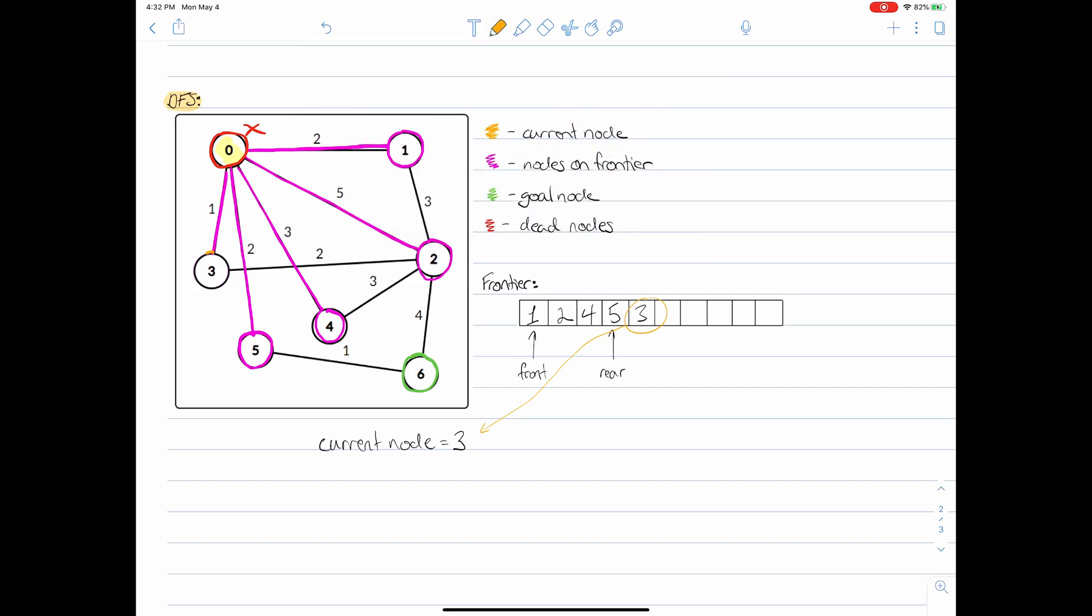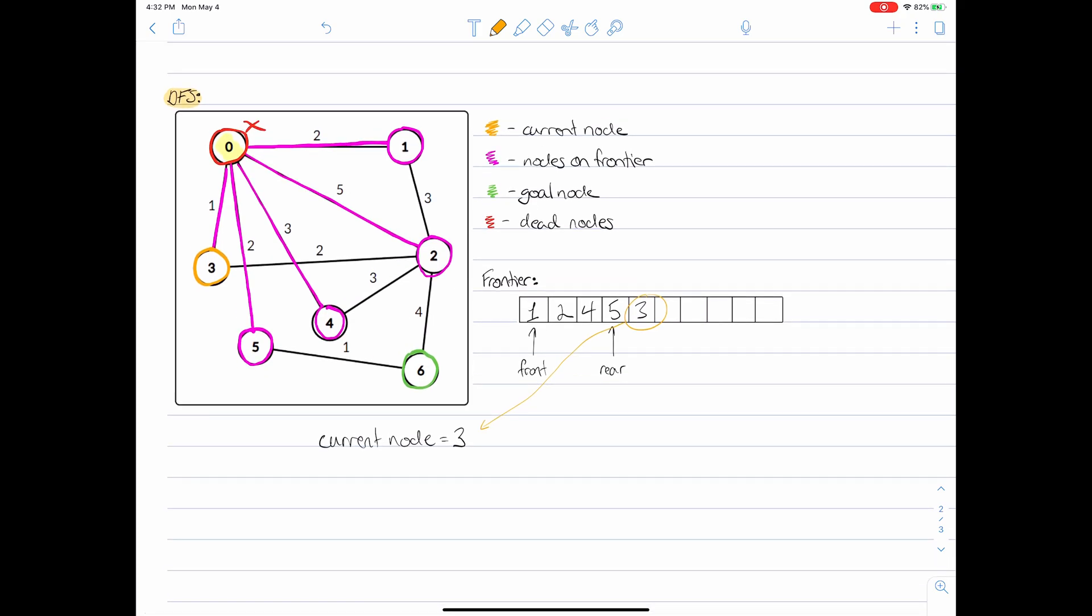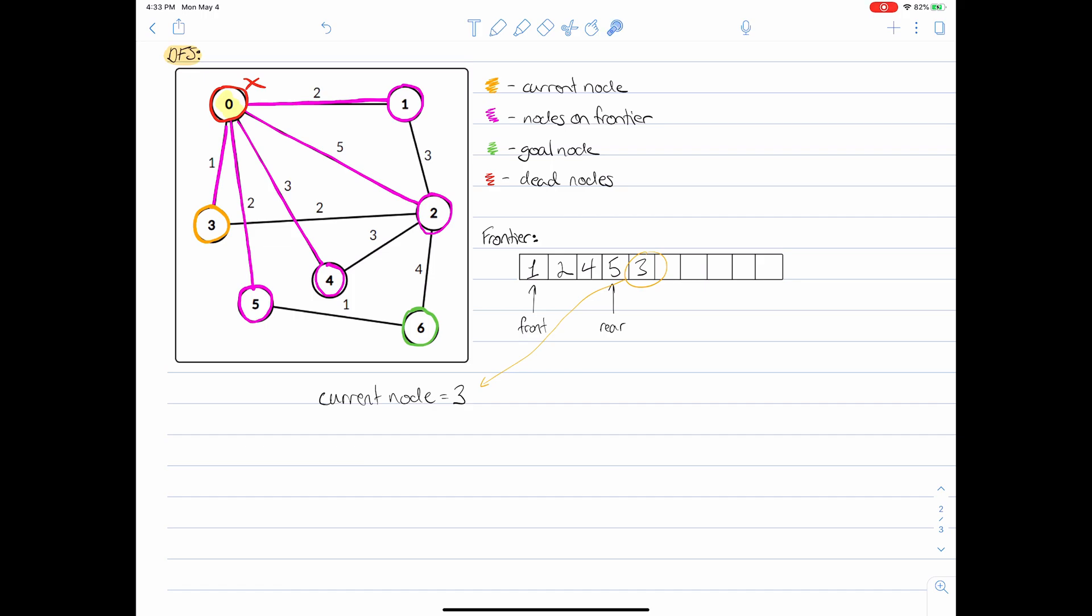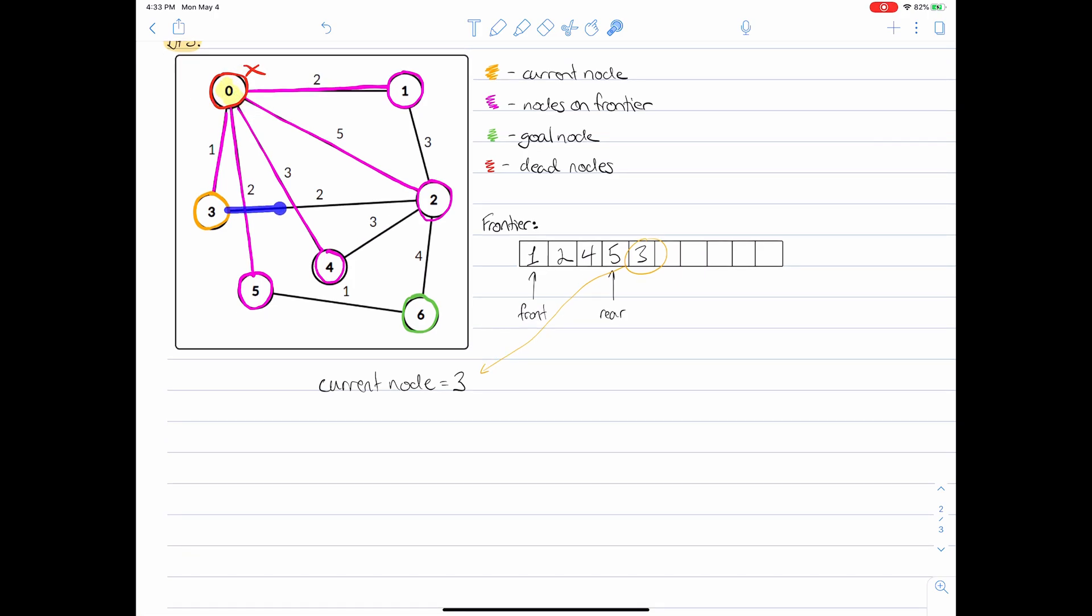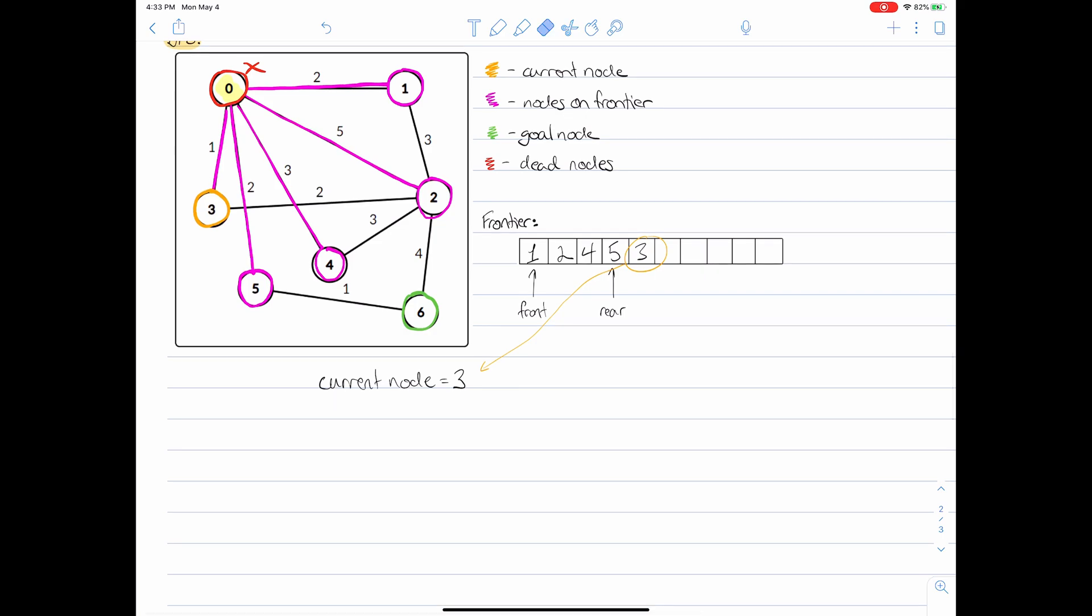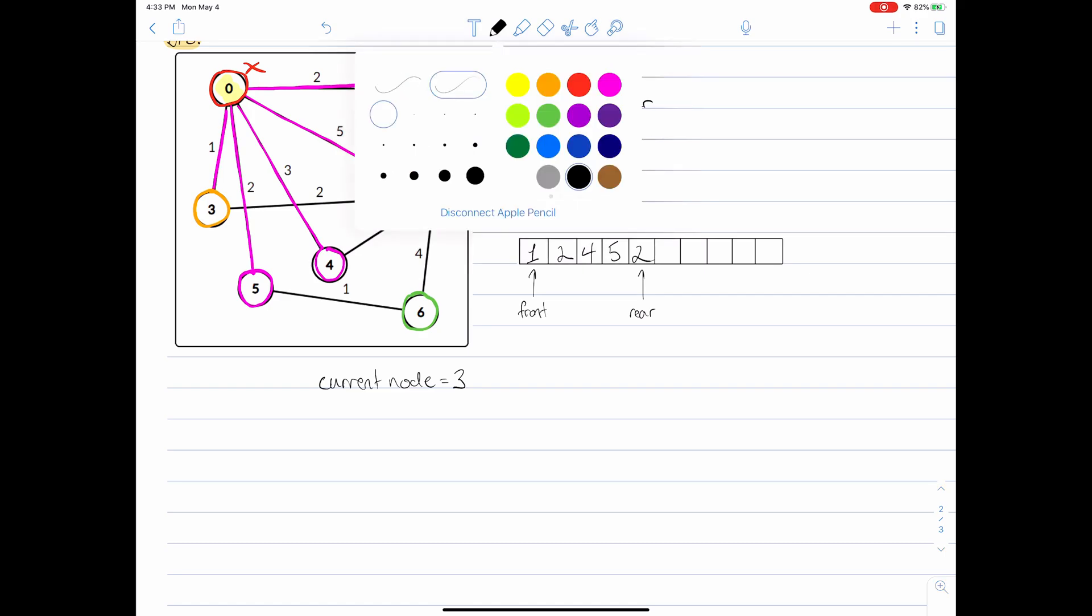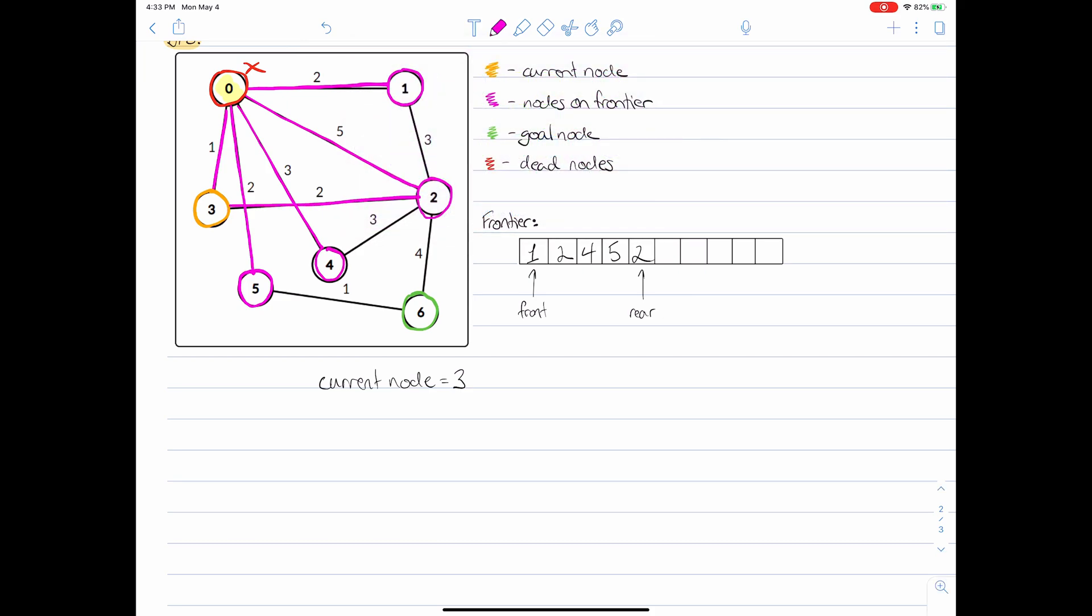We're going to mark up node number three over here. Now we need to explore all of the nodes from node three. From node three we can see that we can't go backwards because this guy is dead. We don't visit dead nodes. So instead we go to node two, we pop this guy in the queue. We get this out of the way for a second and then we increment our rear value. Then we put in our node two here. Now that we've explored node two, we can mark this guy as another dead node because he's been completely explored.